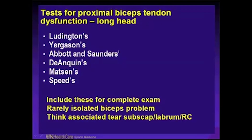For proximal tendon dysfunction of the long head of the biceps, there are at least six named tests to start with. Rarely is a biceps tendon problem isolated. Prior to arthroscopy and our better understanding of partial tears, SLAP tears, rotator cuff tears, capsular problems, and instability, we frequently made the diagnosis of an isolated biceps tendon problem. We're now better at diagnosing based on physical exam and MR imaging. We also have to think about the subscapularis and a partial subscap tear, particularly in association with medial instability of the biceps, as seen on MRI scans.